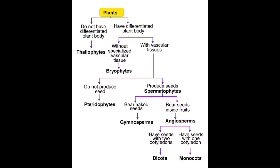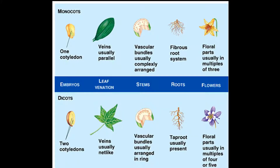A quick comparison between monocotyledons and dicotyledons: the number of cotyledons is one versus two. Leaf vein pattern is parallel in monocots and net-like in dicots. Root structure is fibrous in monocots and taproot in dicots. Multiples of flower parts — such as petals or stamens — are three in monocots, and four or five in dicots. Vascular tissues are scattered around the stem in monocots, while in dicots they are arranged in a ring near the center of the stem.